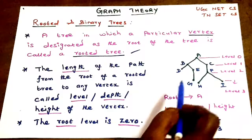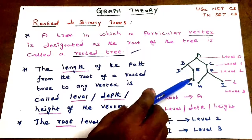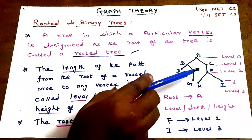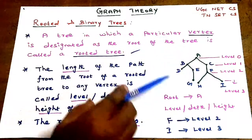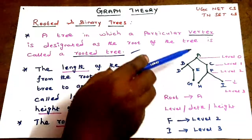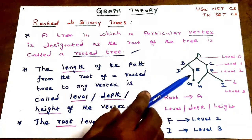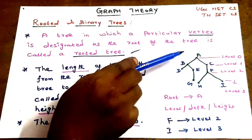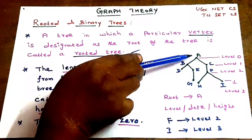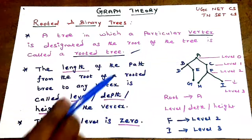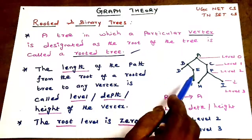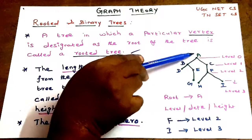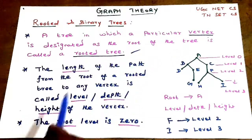A Rooted Tree is a tree in which one particular vertex is designated as the root. For example, in this tree, vertex A is the root of the tree.